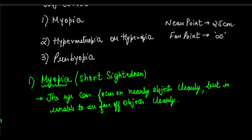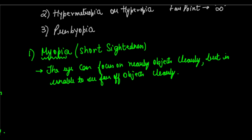In myopia, the near point is fine at 25 cm, but the far point comes closer than infinity. The person cannot see very far off — the far point shifts to a particular closer point, beyond which far objects cannot be seen clearly. That is myopia or short-sightedness.